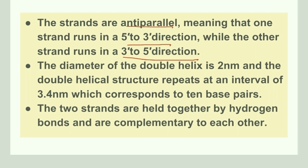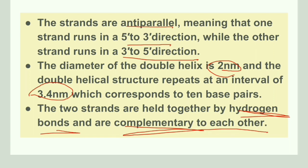The diameter of the double helical structure is 2 nm, and the double helix repeats at an interval of 3.4 nm, giving it 10 base pairs per turn. The two strands are held together by hydrogen bonds and are complementary to each other.